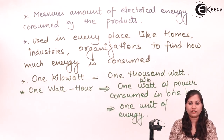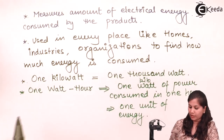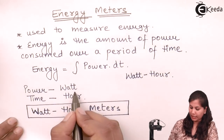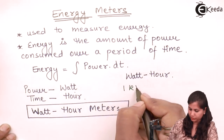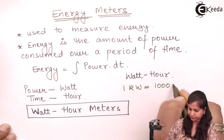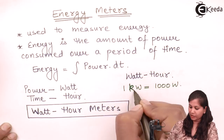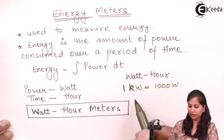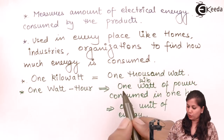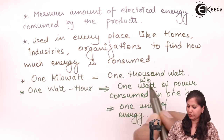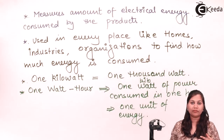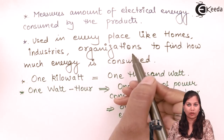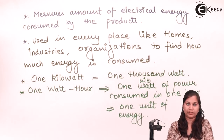Energy is the power consumed in a period of time. If 1 kilowatt of power is consumed in 1 hour, that is equal to 1 unit of energy. So 1 unit of energy equals 1 kilowatt of power consumed in 1 hour. Whenever we measure the energy consumed by appliances in industries, homes, and organizations, we measure the energy in the form of units.